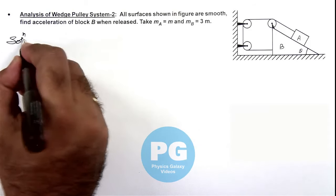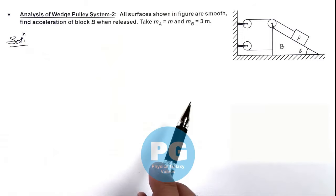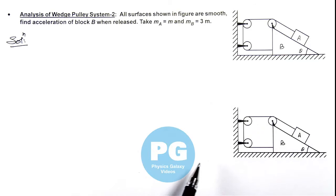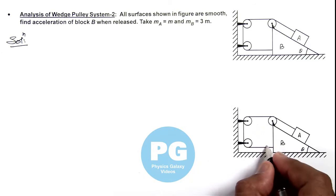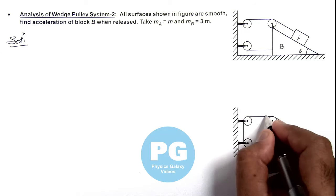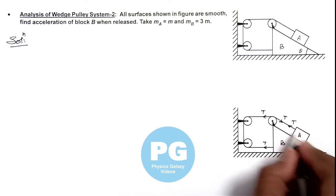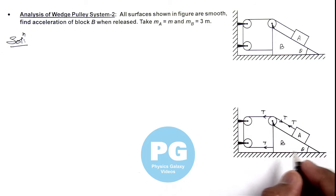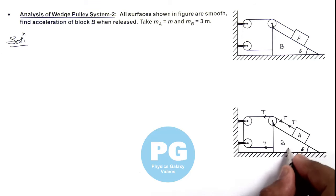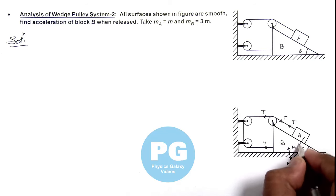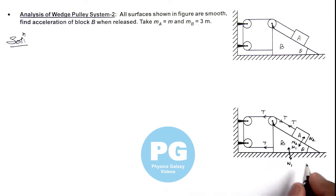To start the analysis, we first distribute all forces as tension and normal reactions in the system. As there is only one string, the tension everywhere can be taken as T if we consider it to be ideal. N1 is the normal reaction between block B and the ground, and N2 is the normal reaction between block A and the ground.